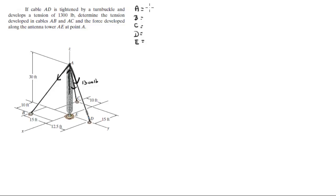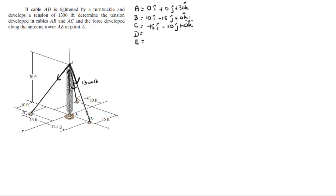Let's find all the points involved. A is at 0i + 0j + 30k. C sits at -15i - 10j + 0k. D sits at 0i + 12.5j + 0k. And E sits at the origin, which is 0, 0, 0.